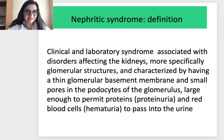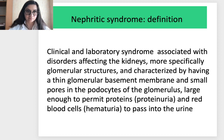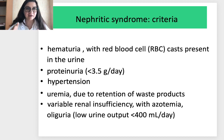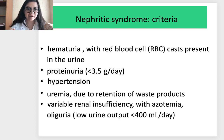Next syndrome: nephritic syndrome. It is a clinical and laboratory syndrome associated with disorders affecting the kidneys, more specifically glomerular structures, characterized by a thin glomerular basement membrane and small pores in the podocytes large enough to permit proteins and red blood cells to pass into the urine. Criteria include hematuria with red blood cell casts in urine and proteinuria — importantly, less than 3.5 grams per liter. This is the main differential sign: more than 3.5 is nephrotic, less than 3.5 is nephritic.